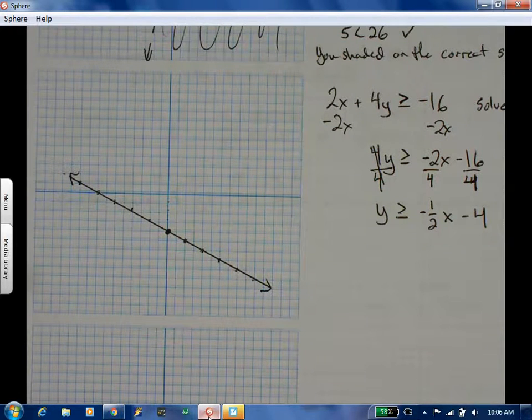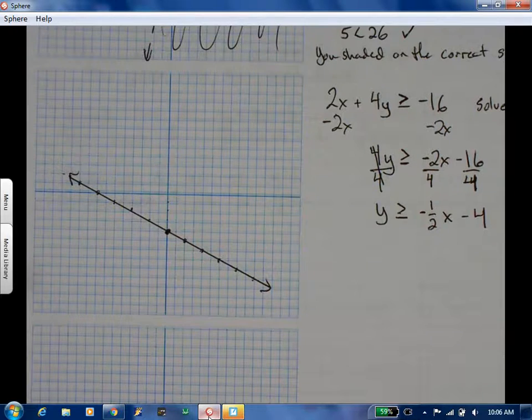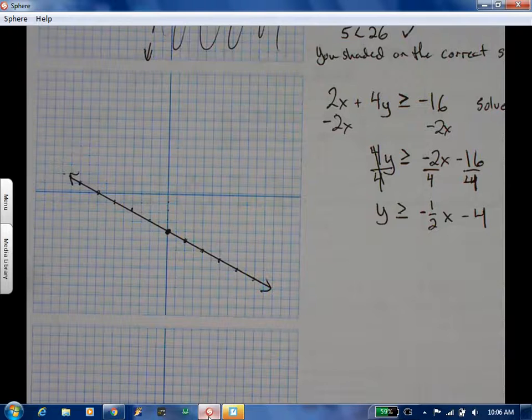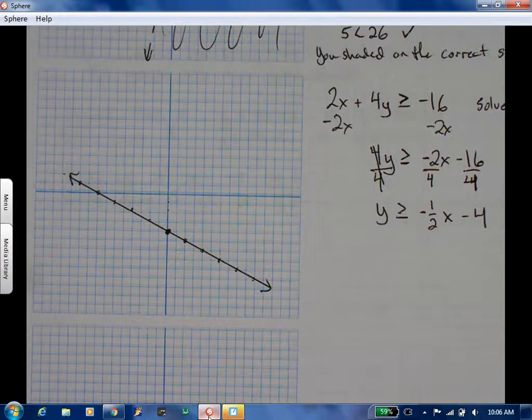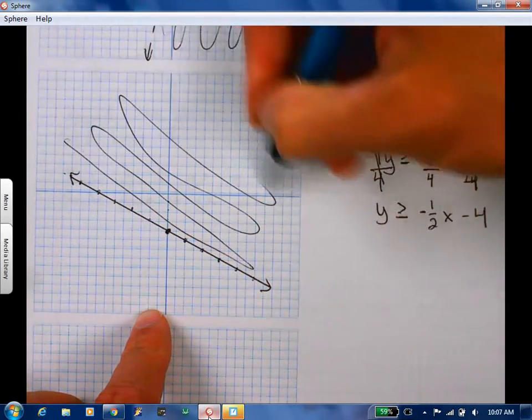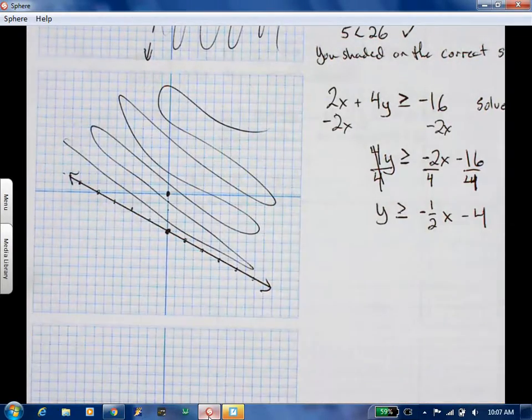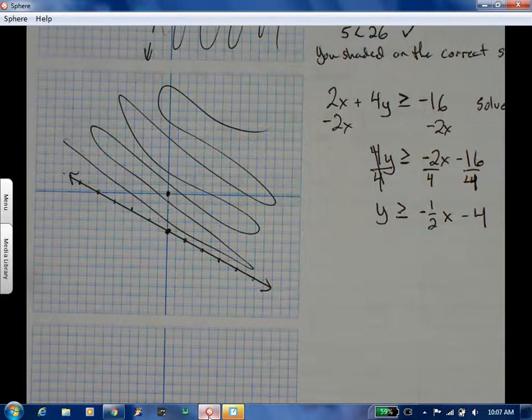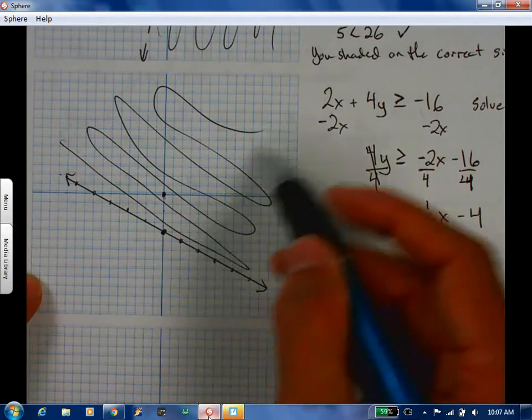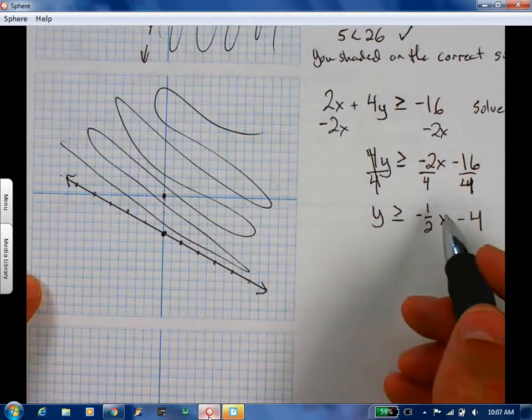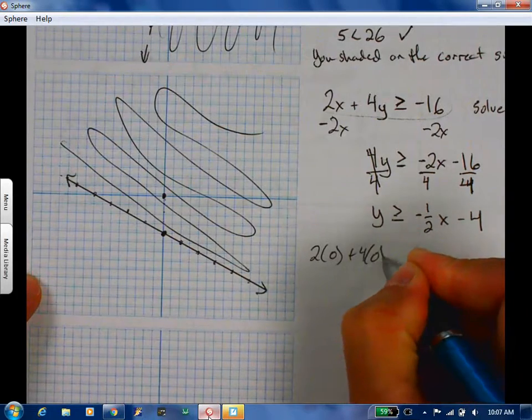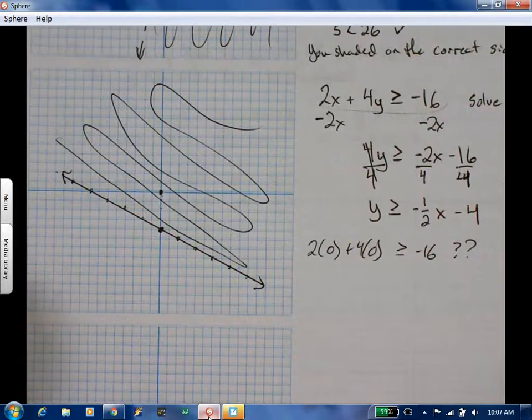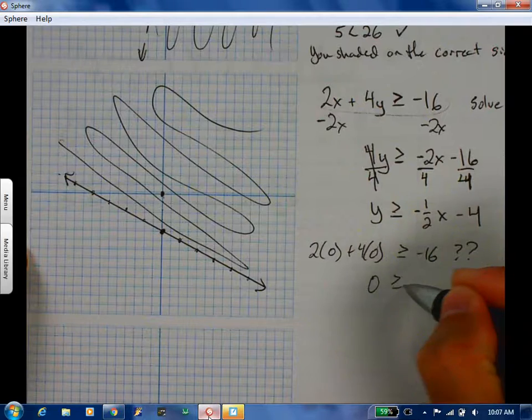Now with the line, the easiest way to tell what's up and what's down. Now this one, zero, zero, is clearly in that. So if I check zero, zero, I'm going to go back up to my original. Two times zero plus four times zero, is that greater than or equal to negative sixteen? Is zero greater than or equal to negative sixteen? Yeah. So it checks. You have the correct side.